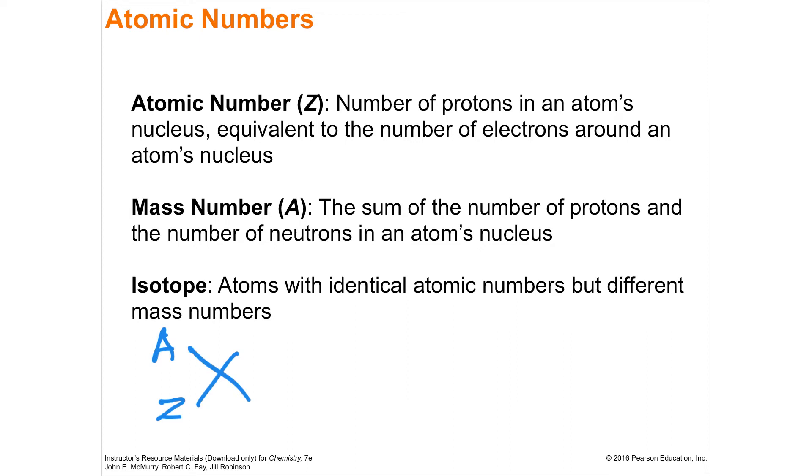The next concept is an isotope. And an isotope are atoms with identical atomic numbers but different mass numbers. So an element is defined by its mass number. So anything that's carbon, for instance, is going to be number six. So anything that has six protons is carbon. But you can have lots of different mass numbers for carbon.